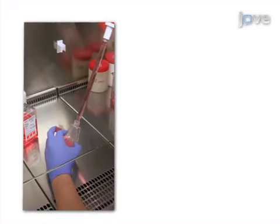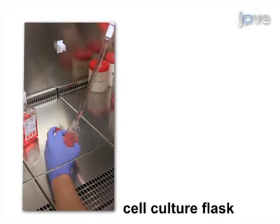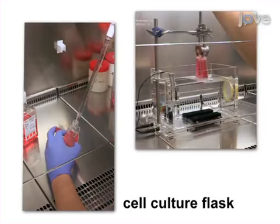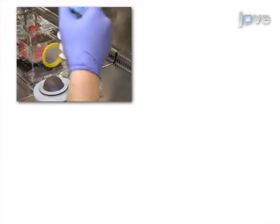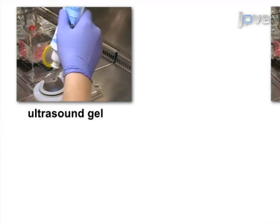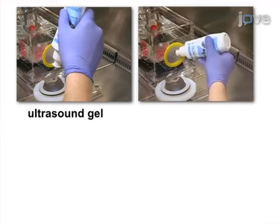This is accomplished by first filling a cell culture flask completely with culture medium and then placing the flask into a heated water bath. The second step is to use a generous amount of ultrasound gel when coupling the applicator to the water bath.